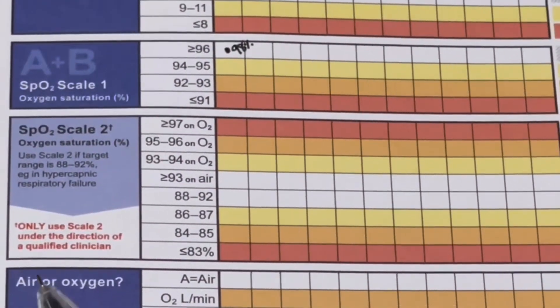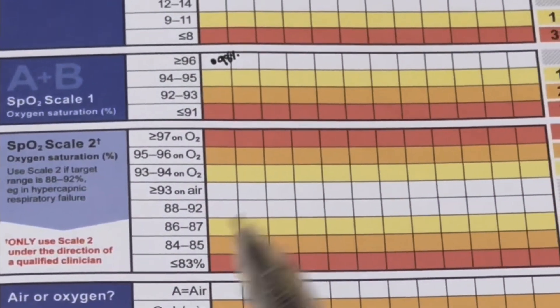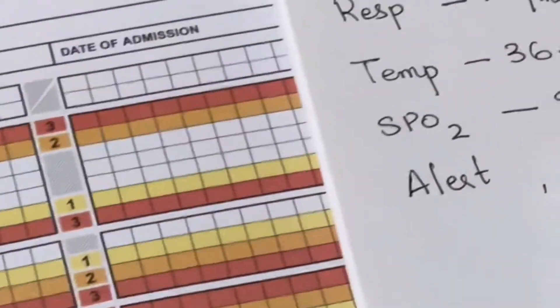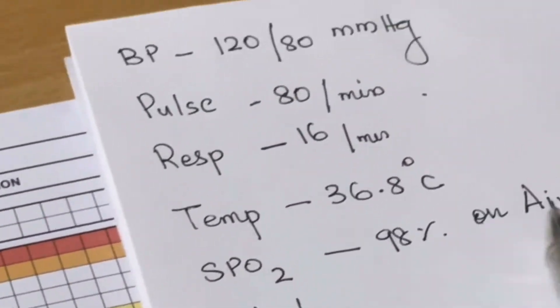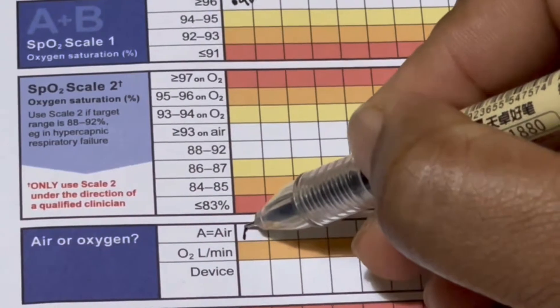The next parameter is air or oxygen. Since the patient is on air, we mark 'A'.